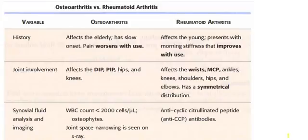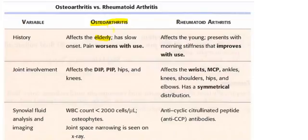Osteoarthritis is a degenerative disorder and rheumatoid arthritis is an inflammatory condition. In osteoarthritis, patients — especially elderly patients — lose their articular cartilage, leading to wear and tear and joint pain. It affects the elderly, has a slow onset, and pain worsens with use.